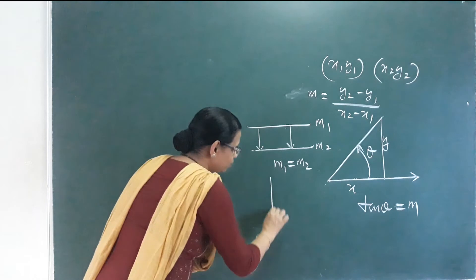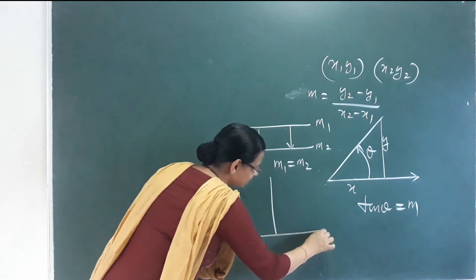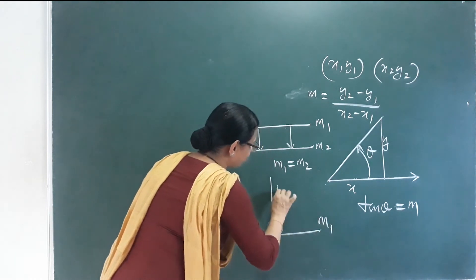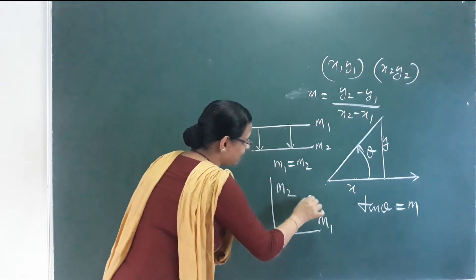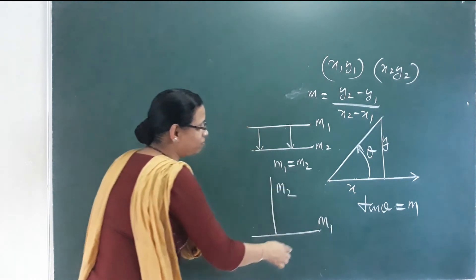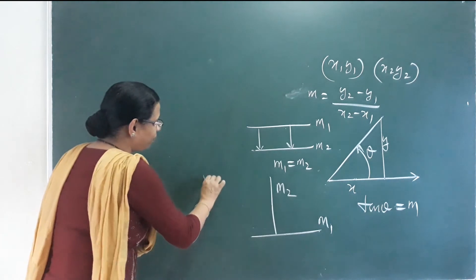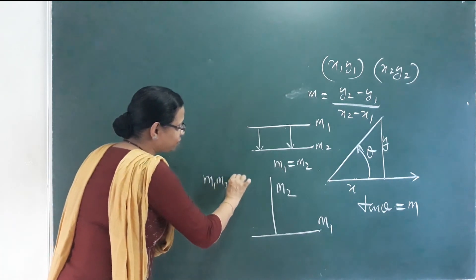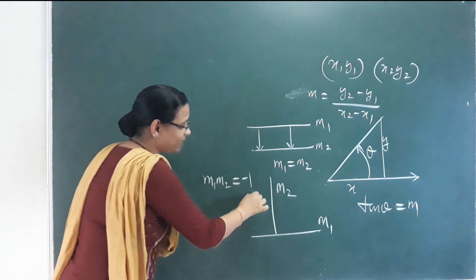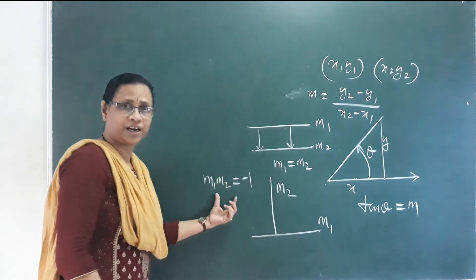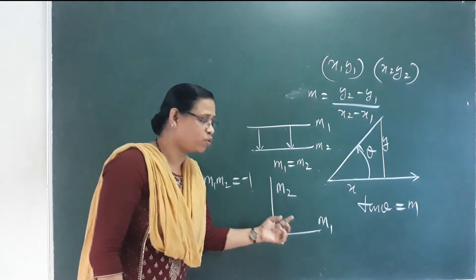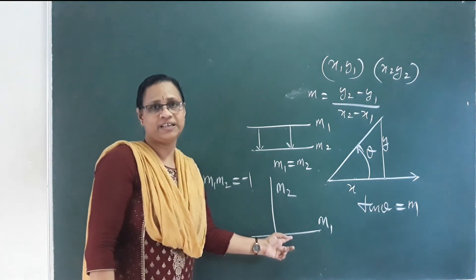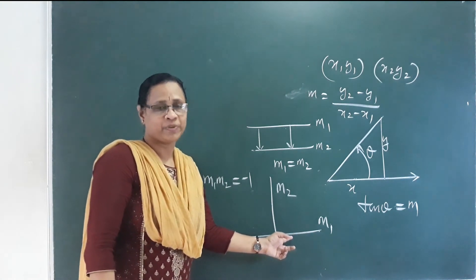For two lines that are perpendicular, the product of their slopes M1 × M2 equals −1. These two lines are perpendicular lines.